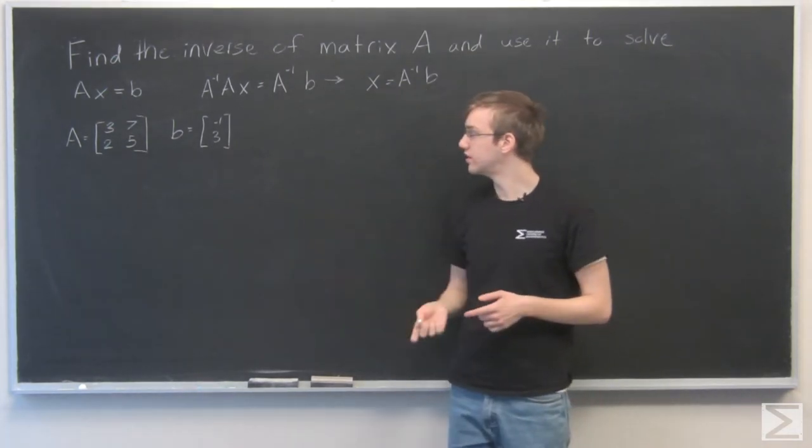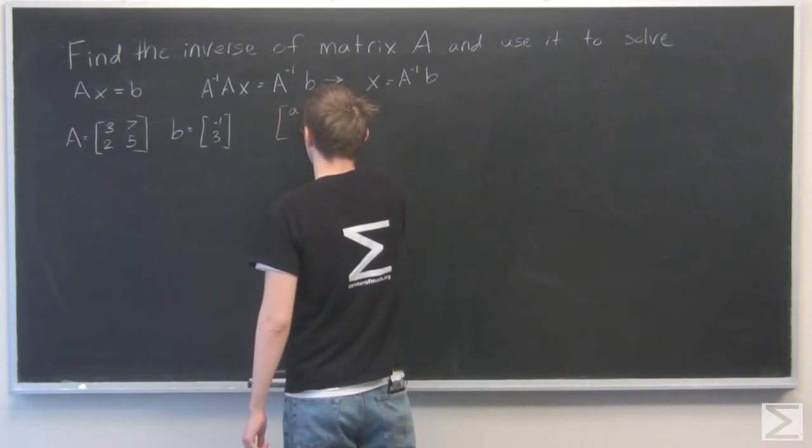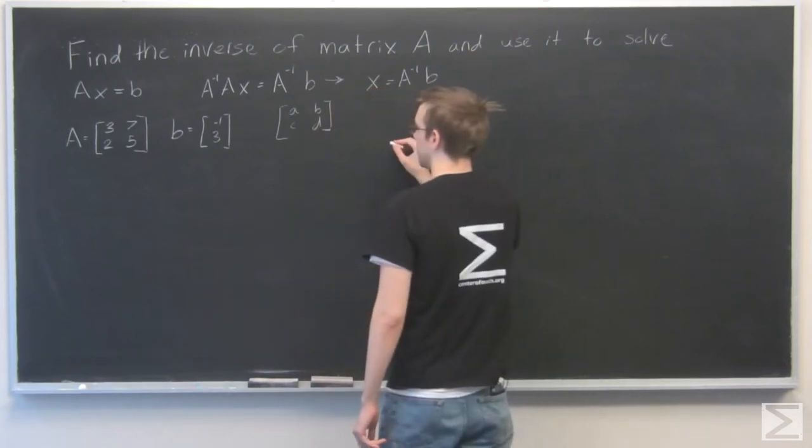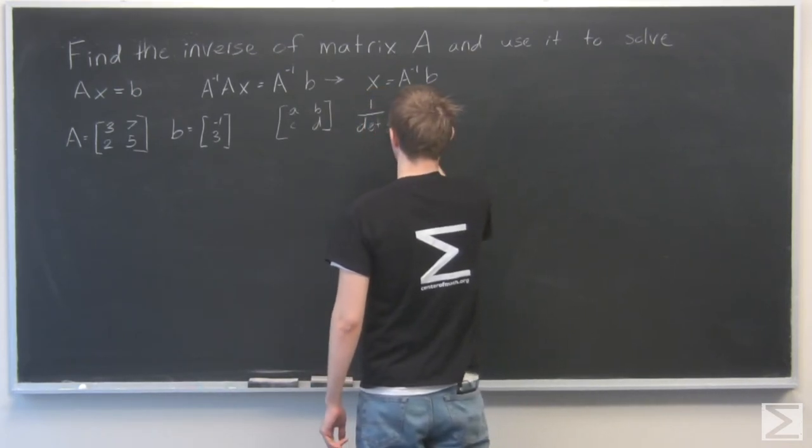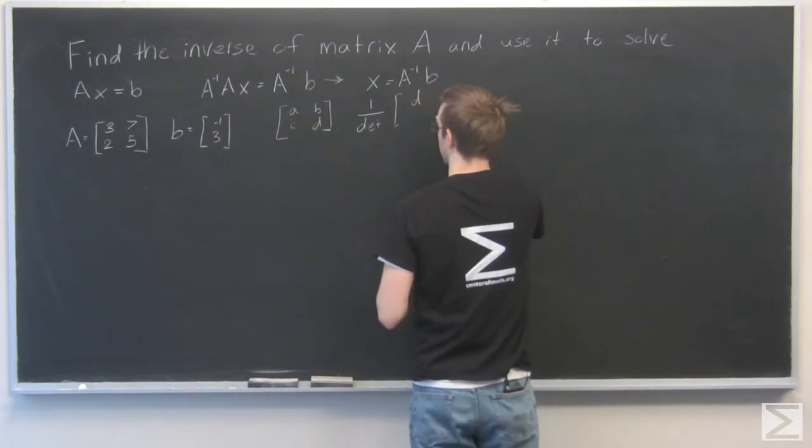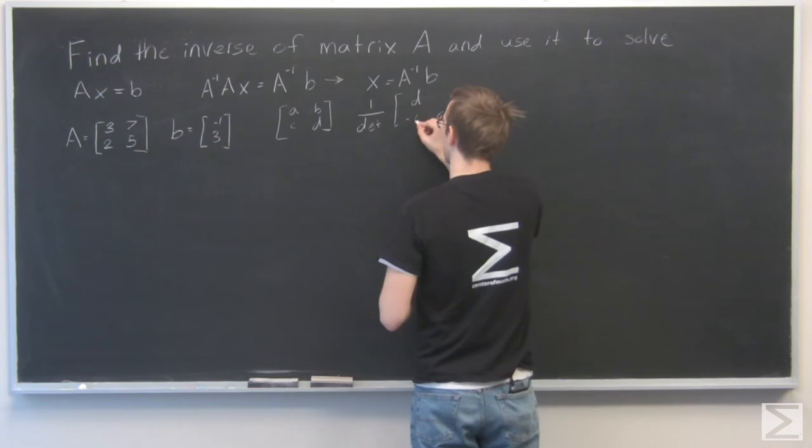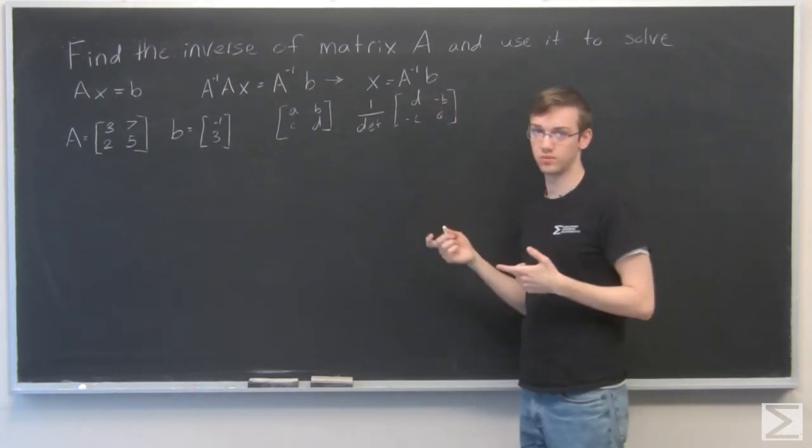All right, so we need to find the inverse of A. Now if you remember, if we have a matrix ABCD, the inverse of that is going to be 1 over the determinant times we switch A and D and C and B become negative. So that's how we find the inverse of a 2 by 2 matrix.